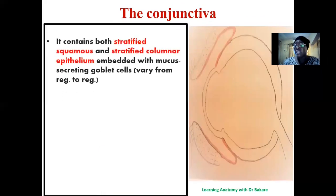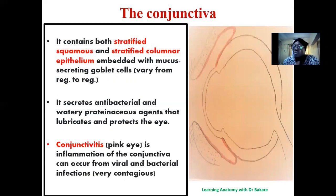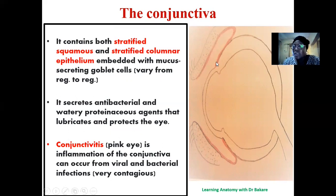The conjunctiva is made up of two sets of epithelium: stratified squamous epithelium and stratified columnar epithelium. Stratified epithelium is protective in function, while columnar epithelium is secretory. The regions lined with stratified columnar epithelium secrete antibacterial and watery proteinous agents that help lubricate the eye. So the conjunctiva protects the eyes against infection and helps lubricate the eye. This membrane can be infected by bacteria or a virus, causing a pinkish coloration of the eye — termed conjunctivitis, also called 'apollo.' It is very contagious and can easily be transmitted from one person to another.